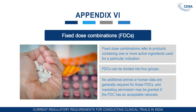Appendix 6 is related to fixed dose combinations. Fixed dose combination refers to a product containing one or more active ingredients used for a particular indication. FDC has been divided into four groups: when two or more individually approved products are combined for the first time it is a new FDC; if the ratio, strength, dosage form, or indication has been changed it is also considered a fixed dose combination. As these are already approved in the country, no additional animal or human data are generally required for these FDCs, and marketing permission may be granted if the FDC has an acceptable rationale.